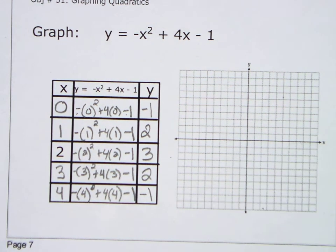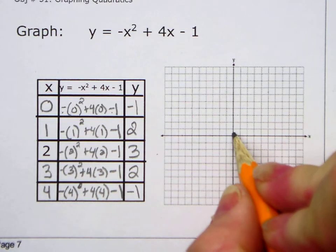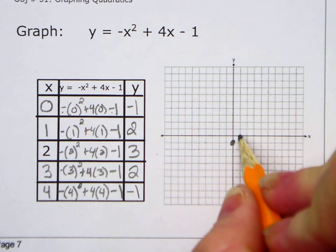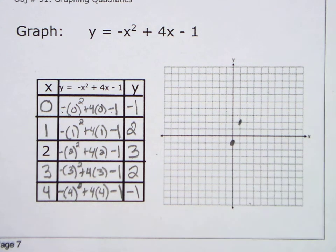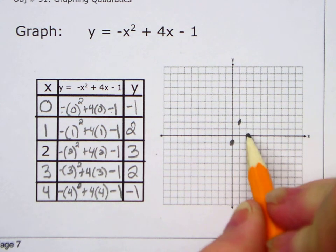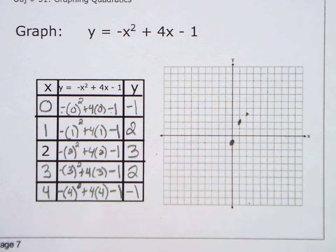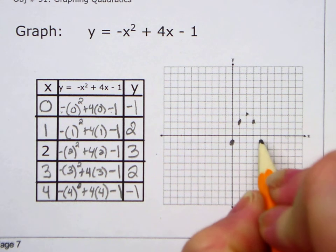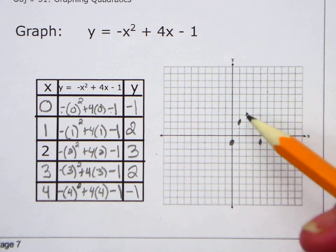So now, I'm plotting those points. I'm going to plot those points. So I have 0, negative 1. 0, negative 1. 1, 2. 2, 3. 3, 2. 4, negative 1.